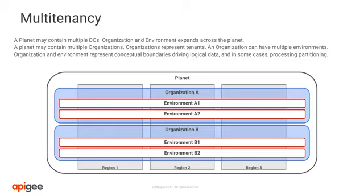The scope of organizations and environments allows you to execute actions in a single location and influence the behavior of APIs, the platform, and infrastructure components across multiple regions. For example, deploying an API to environment A1 in region 3 will deploy the API to A1 in regions 1 and 2 as well. This allows you to manage a distributed infrastructure from a centralized point.